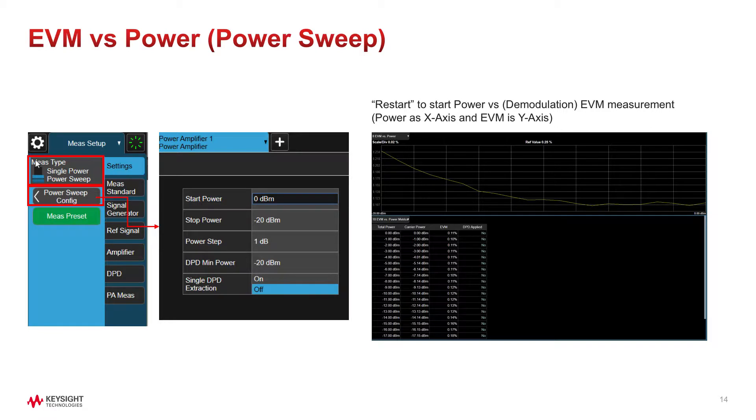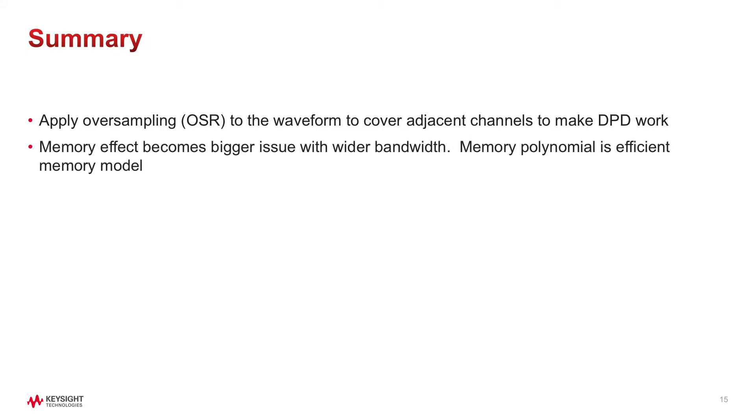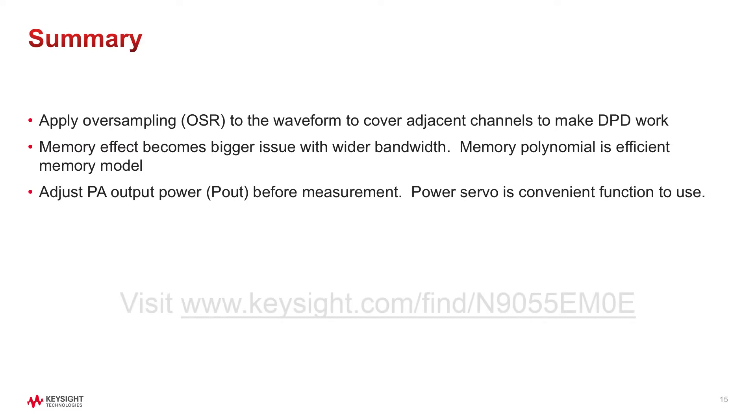As we have seen, making successful PA measurement with DPD requires some considerations. Apply oversampling to the waveform to cover adjacent channels. Memory effect becomes bigger issue as bandwidth gets wider, and memory polynomial is an efficient memory model to use. Adjust PA output before measurements. Power servo is a convenient function to use. To learn more about DPD test solutions, please visit Keysight.com. Thank you for watching.